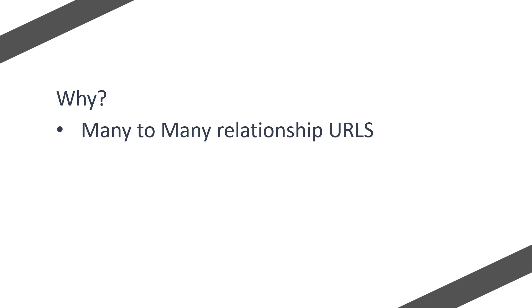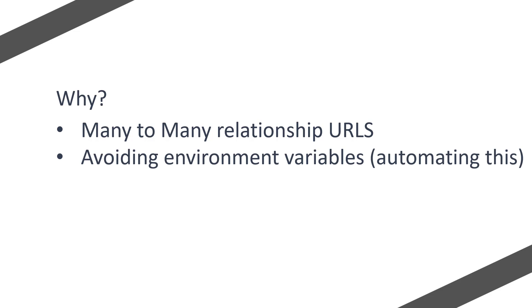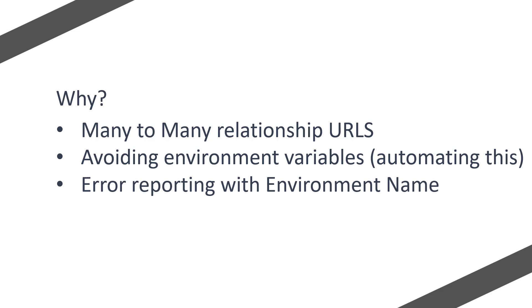So why would we want to do this? Well in the case of many-to-many relationships you need the fully fledged URL, and if you're changing between environments you're going to need to change that URL, so why not do it automatically? We can avoid using environmental variables and essentially automate this. There's also the fact that you may want to provide error reporting on flows failing, and you might want to grab the environmental name. So there are lots of reasons why we may need the environment information when running flows.